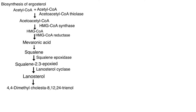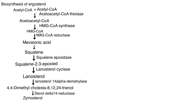Lanosterol is then converted to 4,4-dimethylcholesta-8,12,24-trienol with the help of enzyme 14-alpha-demethylase. From 4,4-dimethylcholesta-8,12,24-trienol, zymosterol is formed with the help of enzyme sterol delta-14 reductase, and from zymosterol, ergosterol is formed with the help of enzyme sterol delta-8 isomerase.